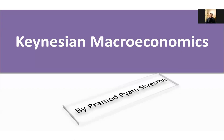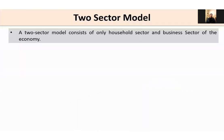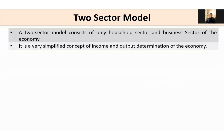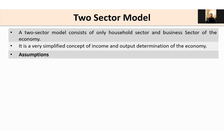Hello everyone, today we are going to discuss Keynesian macroeconomics in a very simple setup — the two-sector model. A two-sector model consists of only the household sector and business sector of the economy. It is a very simplified concept for income and output determination of the economy.